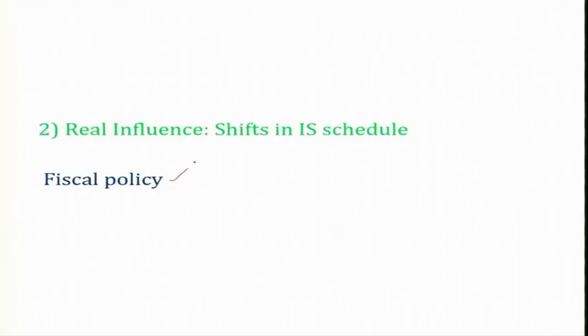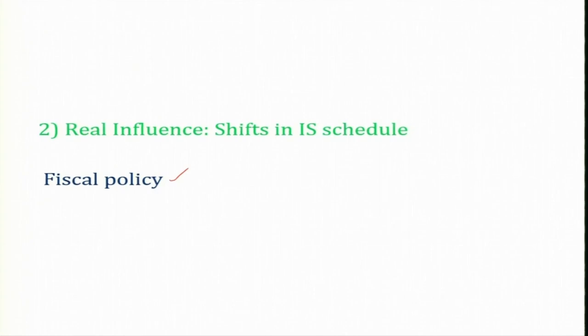In the previous class we started how GDP — that is aggregate demand or income — is going to change when there is an increase in money supply, and subsequently we started with fiscal policy, that means increase in government expenditure or increase in tax and how that is going to affect income in the macroeconomy. We showed that when there is an increase in government expenditure, the IS curve will be shifting rightwards, and this distance is the full Keynesian multiplier, that is the simple Keynesian multiplier.